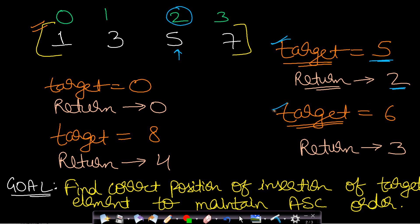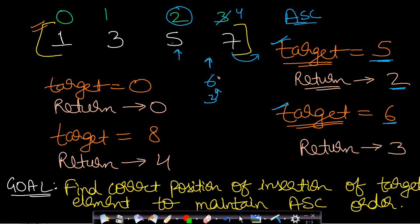Now let us assume that our target is six. If you search for six in this array, you will see that six is not present. If the elements are maintained in ascending order and six is inserted, then six will go in between five and seven. The index of five is two and the index of seven is three. So if six goes between five and seven, the index of six will become three, pushing seven one position to the right. The return value will be three.